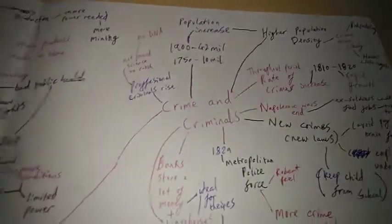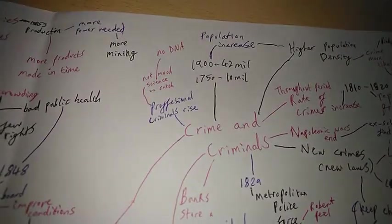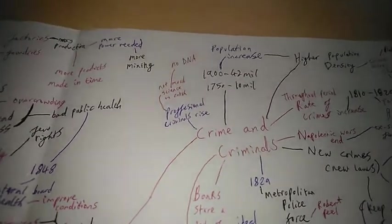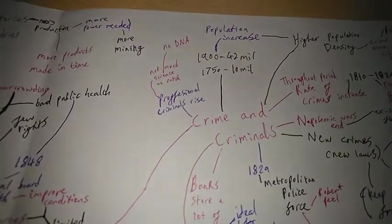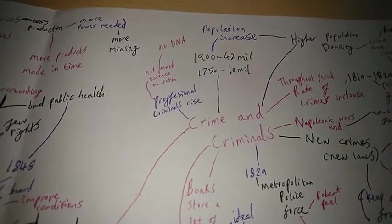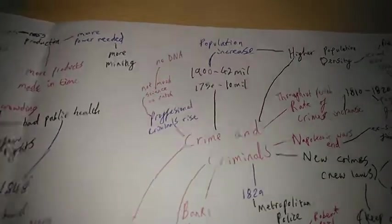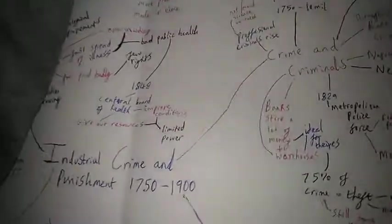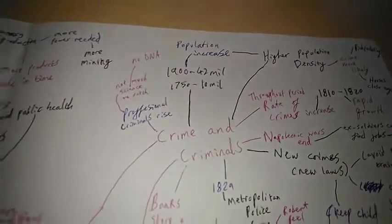Now let's go over to crime and criminals. The amount of professional criminals rose, that was people who were criminals as their job, not just petty thieves. They actually did this criminal business full time. This was especially bad as there was not much science to catch them. There was no DNA testing until after this time.